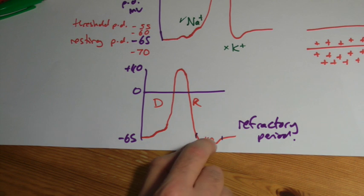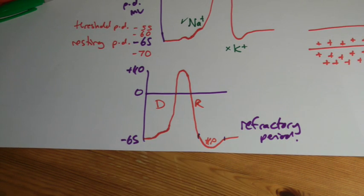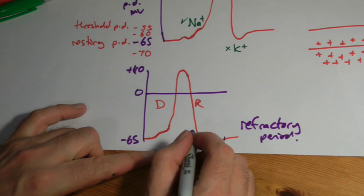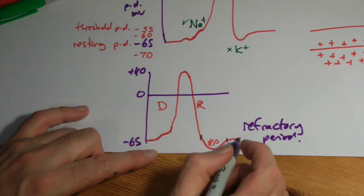You can't do anything with it, sorry, with the neuron. You can't do anything with it. So that's the refractory period in here until it's got back to its resting state.